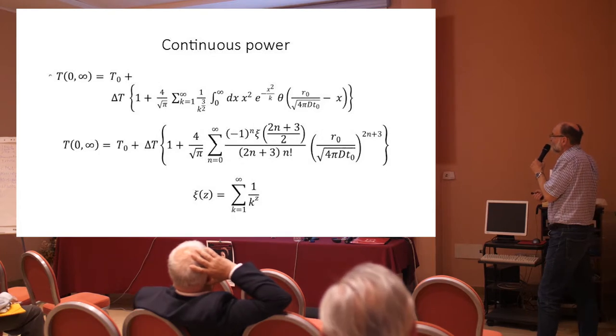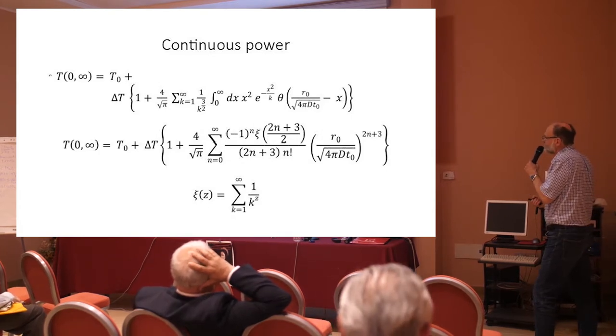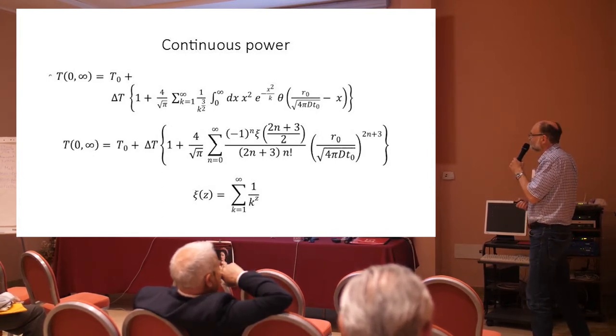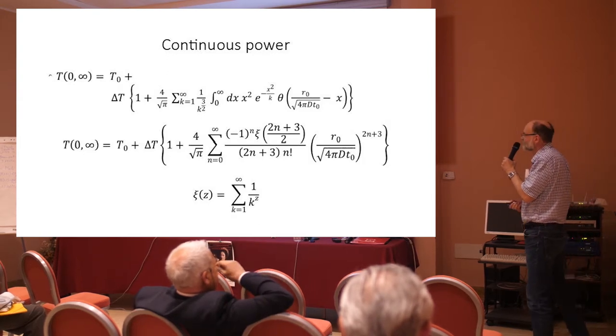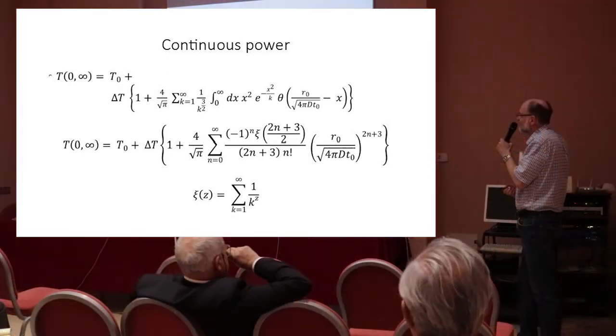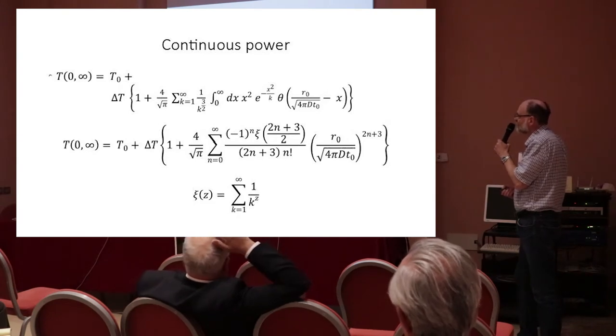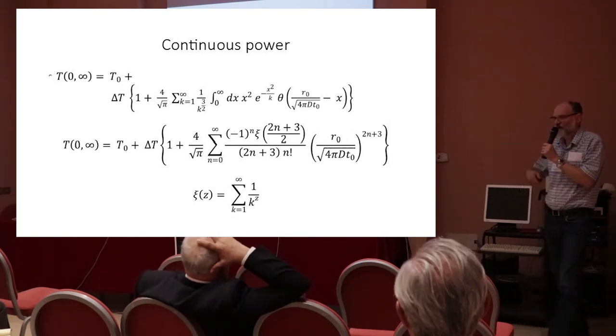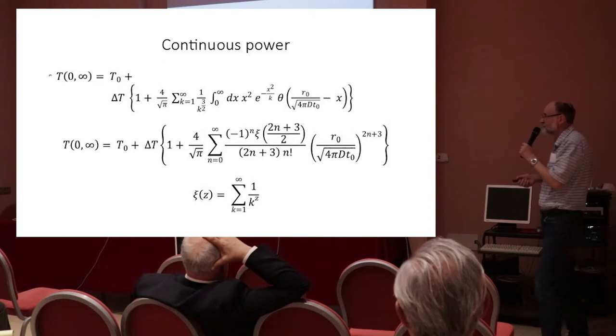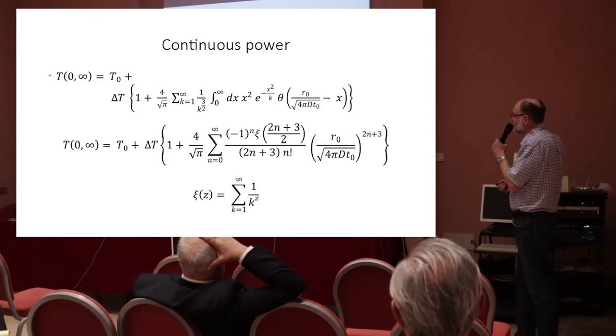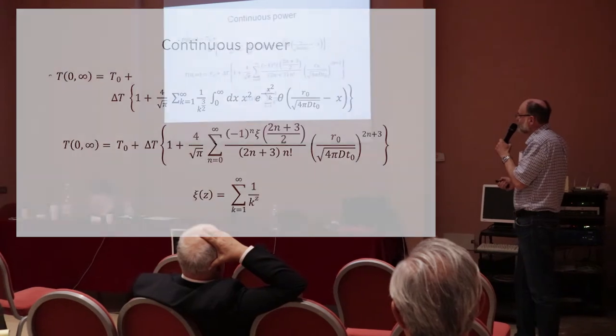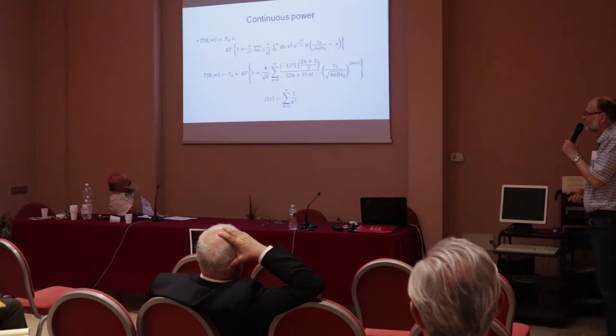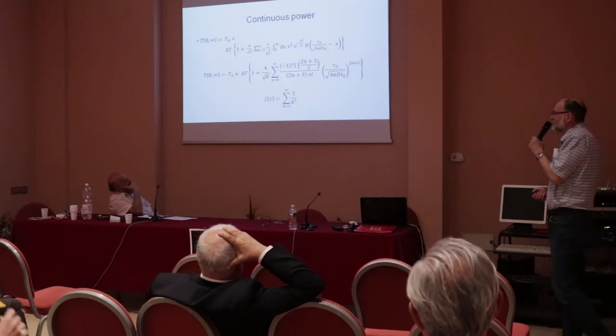For numerical calculation, the convergence of this summation is at least rather good. Even better convergence can be found if we expand this exponential function by Taylor expansion. Here, the zeta function is the normal Riemann zeta function.